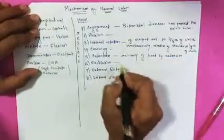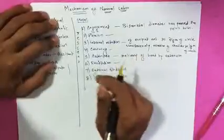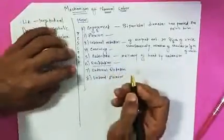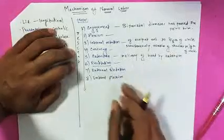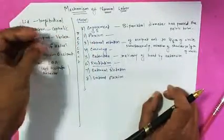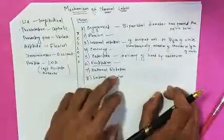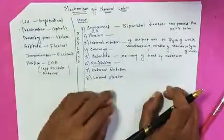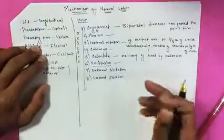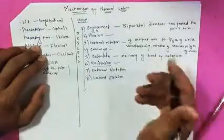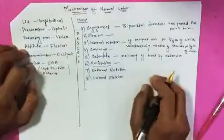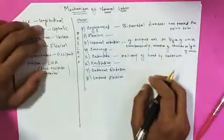And then comes restitution. Many students get confused in restitution. In restitution, what happens is there is untwisting of the head, which had occurred during the internal rotation. So in restitution, the head untwists back to LOA position — back to left occiput anterior position — during this restitution process.